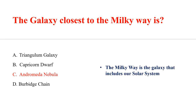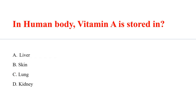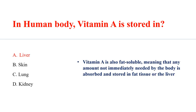In the human body, Vitamin A is stored in the liver. Vitamin A is fat-soluble, meaning that any amount not immediately needed by the body is absorbed and stored in fat tissue or the liver.